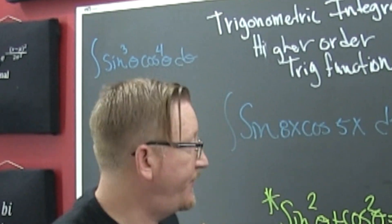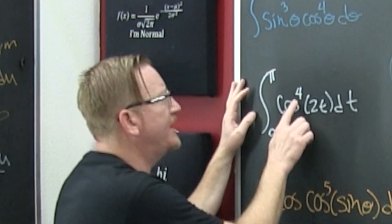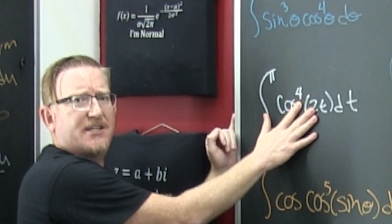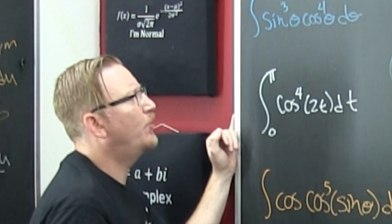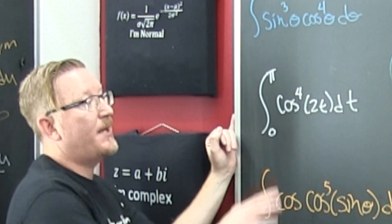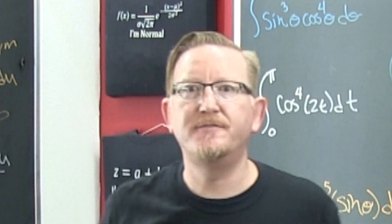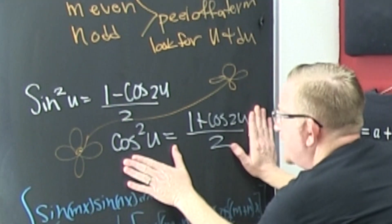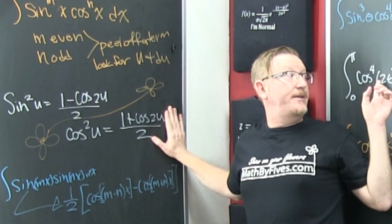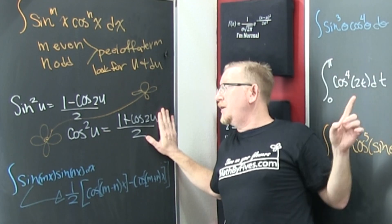What about this one — where the cosine is even and it's just the cosine there? Use the reduction formulas; those are going to be nice. You're going to use this one twice — you're going to break the cosine to the fourth up into cosine squared times cosine squared.